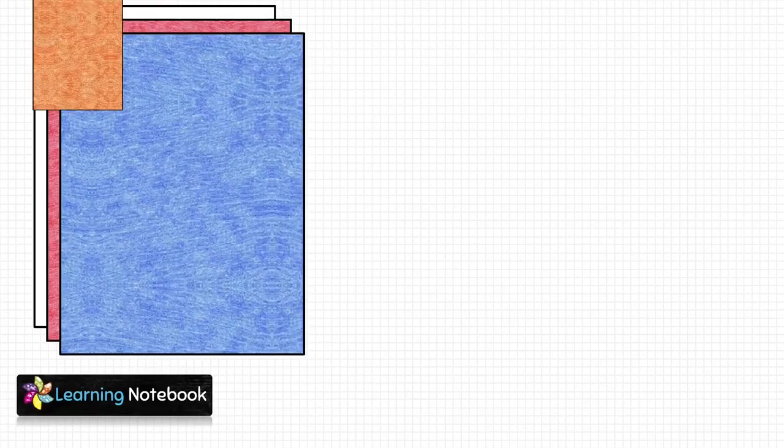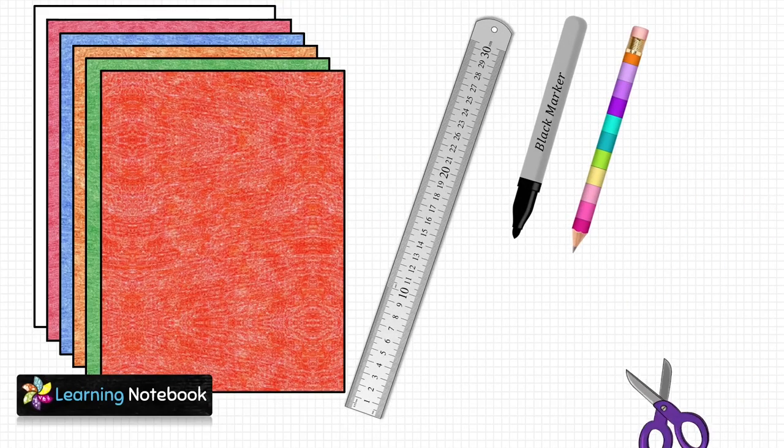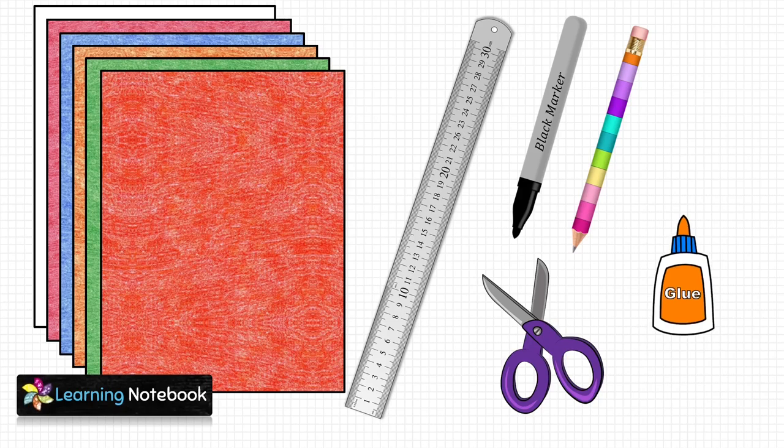For this activity we need a few colorful thick sheets, a ruler, a black marker pen, a pencil, a pair of scissors, and a bottle of glue.